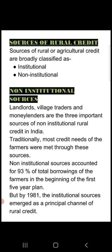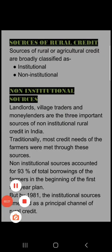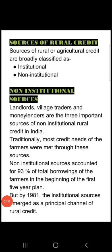Traditionally, farmers met their credit needs through these non-institutional sources. From non-institutional sources, approximately 93% of total borrowings were made. This is data from the first Five-Year Plan — during that period, 93% of borrowings came from non-institutional sources, and only 7% came from institutional sources.